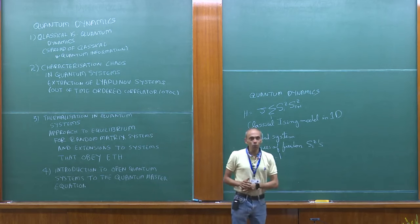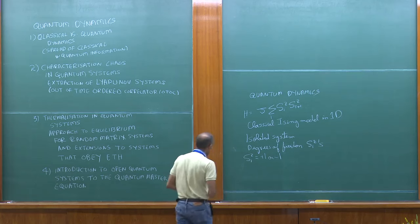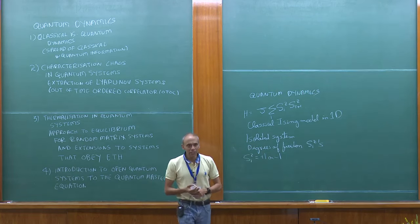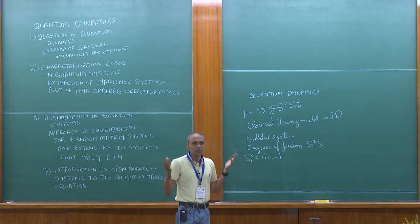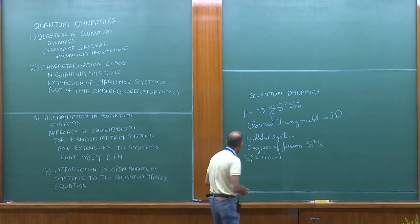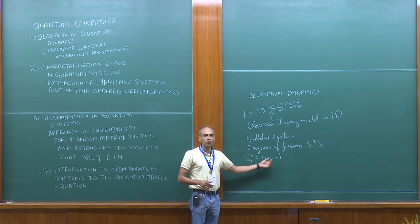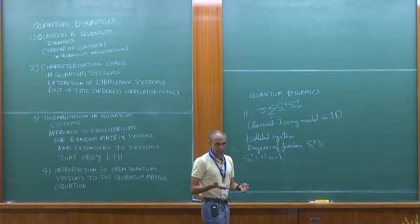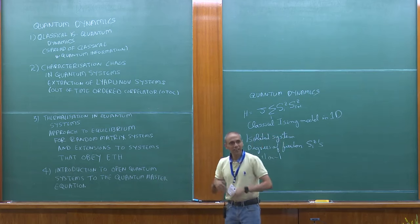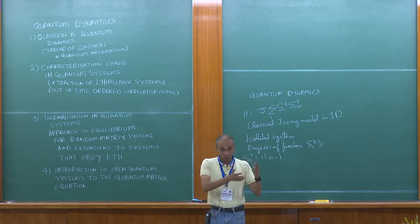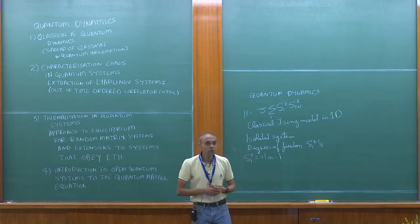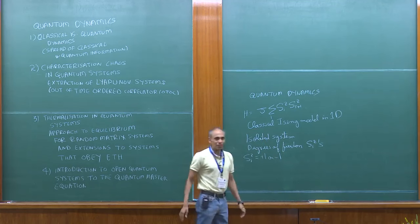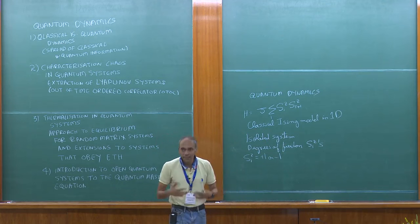What makes this model un-quantum is that the degrees of freedom can simultaneously have any combination of values — there's no restriction like in a quantum system, where S_x, S_y, and S_z cannot simultaneously have precise values. What makes it un-dynamic is that if you start the system in some particular state with all S_z values specified and no other degrees of freedom, it's simply not going to evolve — it will just be in that state forever.